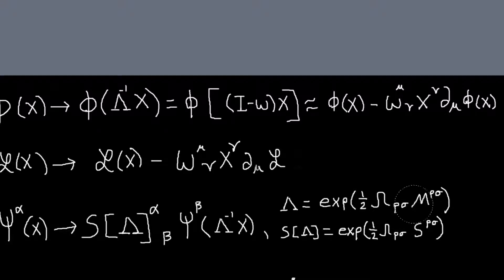Omega, rho, sigma is anti-symmetric in these indices. And similarly this S is the same kind of thing, so lambda and S both represent the same Lorentz transformation, but lambda acts on four-vectors and S acts on spinners, so that's why they're different matrices.